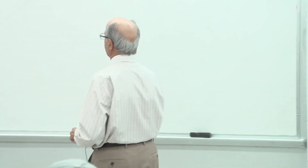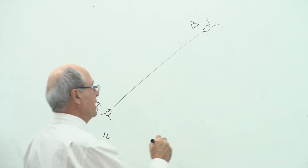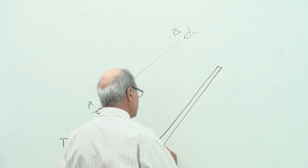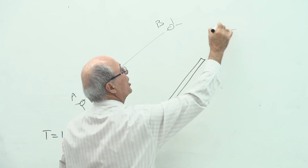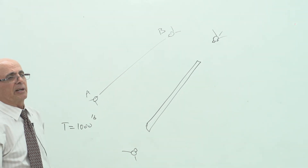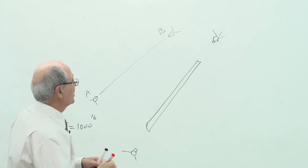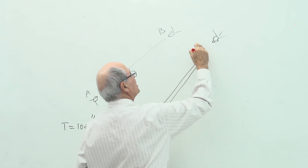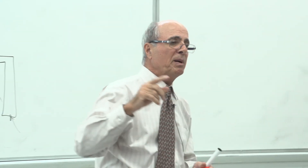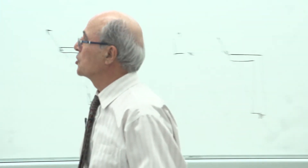For a truss member in tension, draw the free body diagram by cutting very near joint A and very near joint B. If the member is in tension, the forces on the member must pull outward — 1000 lb away from each joint. From now on: tension is positive (+), compression is negative (−). This is our sign convention for trusses. Please write it down.